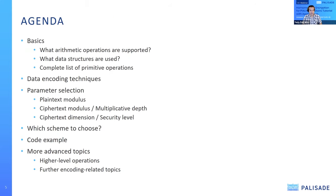The agenda of today's talk is as follows: first, we'll introduce the basics — what arithmetic operations are supported homomorphically. We'll discuss typical data structures, provide the full list of primitive operations that all homomorphic computations based on integer arithmetic are built from, and talk about encoding, parameter selection — plaintext modulus, ciphertext modulus, and ciphertext dimension — which scheme to use, a code example, and some advanced topics.